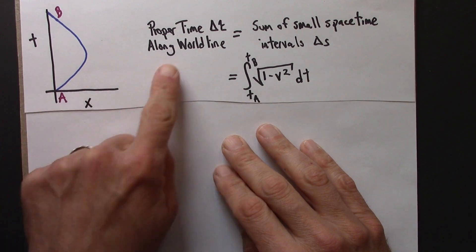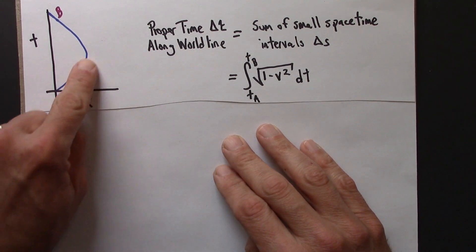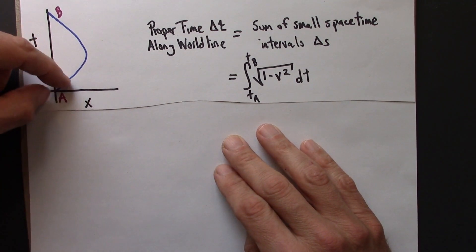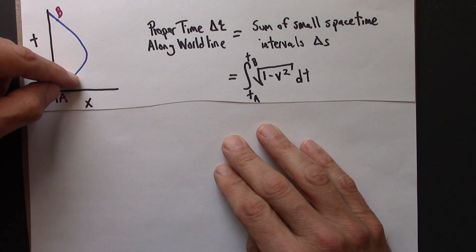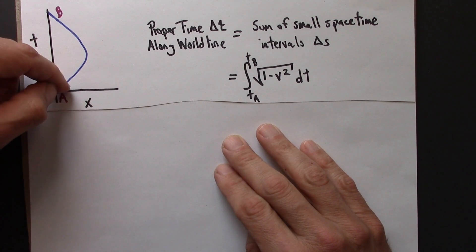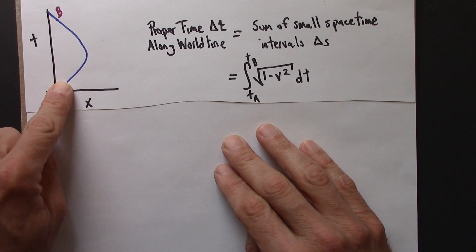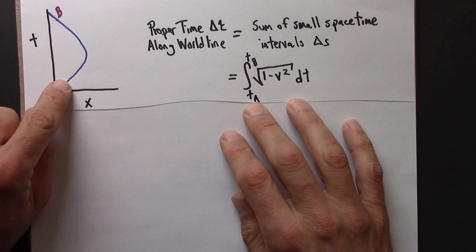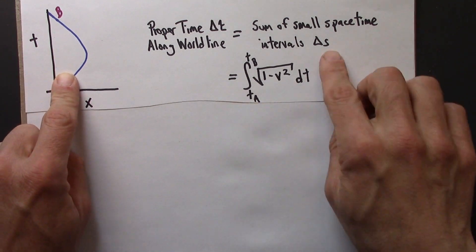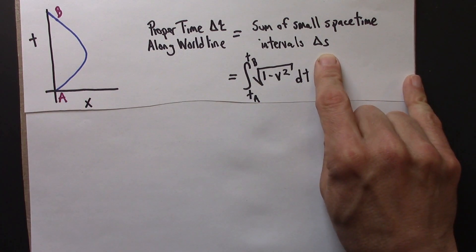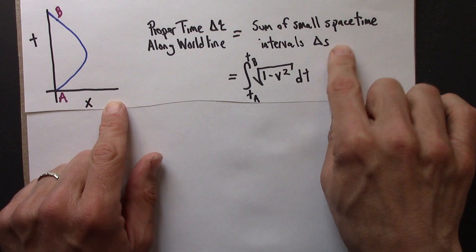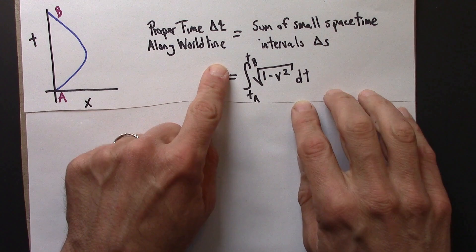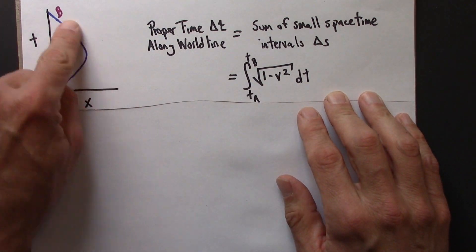We've seen how to calculate the proper time, delta tau, along a particular world line. We imagine that world line consisting of a bunch of very small line segments, and those line segments, when you zoom in enough, will have constant velocity. Then the time experienced along each of those little segments is a space-time interval, because it's inertial, moving at constant velocity. So we add up all the space-time intervals along all these little steps, and we get the total proper time along this world line.